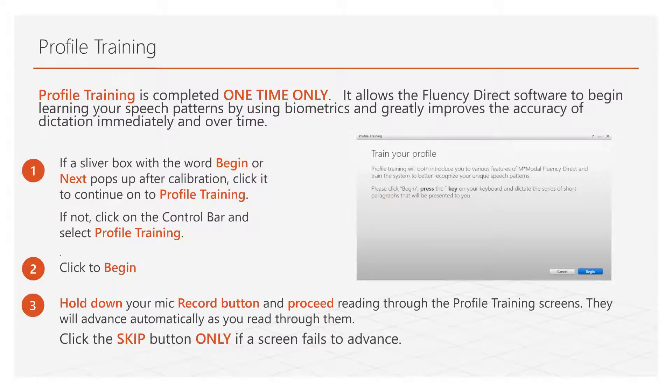Profile training is completed one time only and is the last step in setting up your voice profile. Fluency uses biometrics to allow the software to begin learning your speech patterns, which will improve the accuracy of transcription immediately and over time. Normally, you will see a silver text box with the word Begin or Next after you have set up your handheld and/or mobile microphones and completed calibration. If you do not see this option, simply click on the control bar, choose Profile Training, and then click Begin.